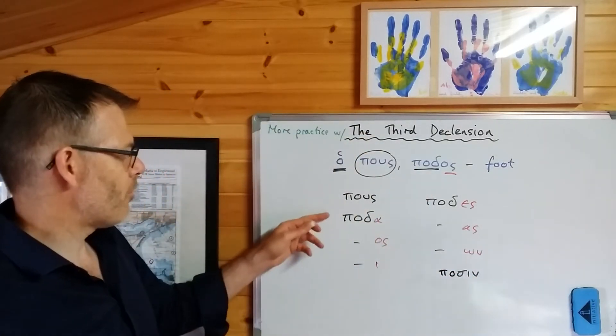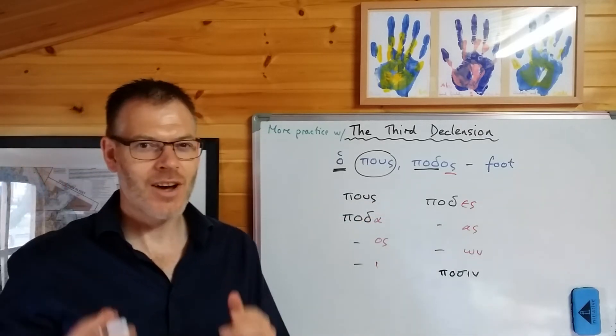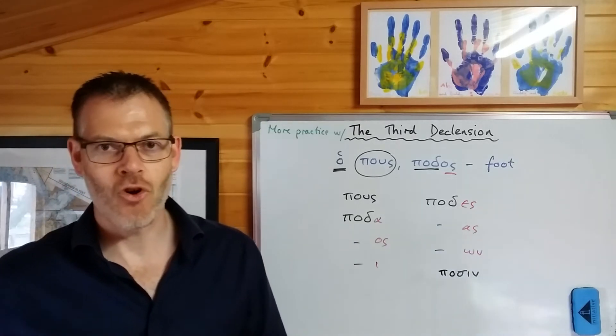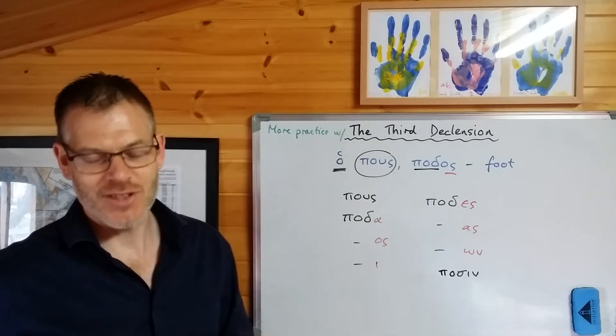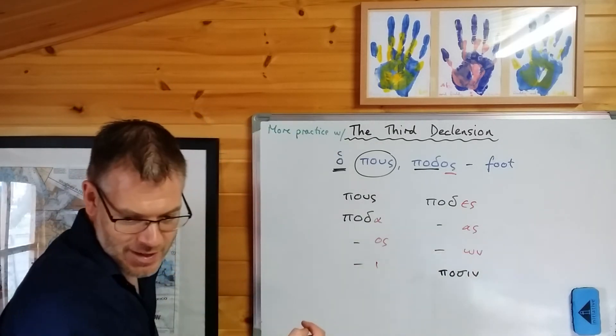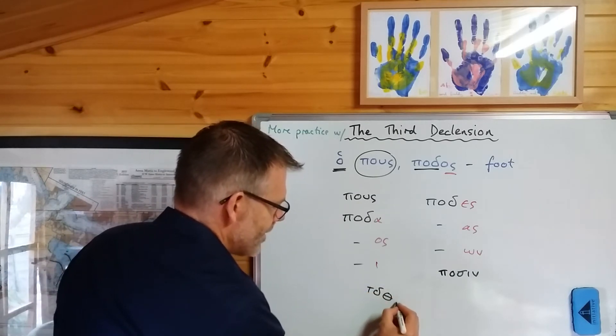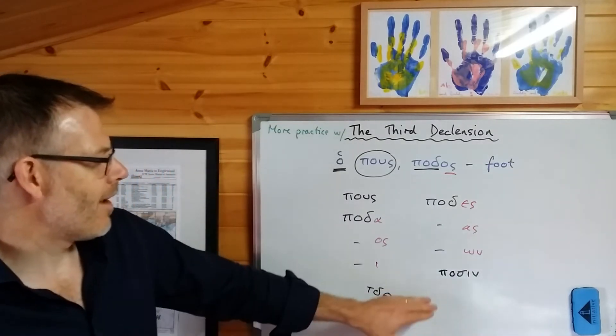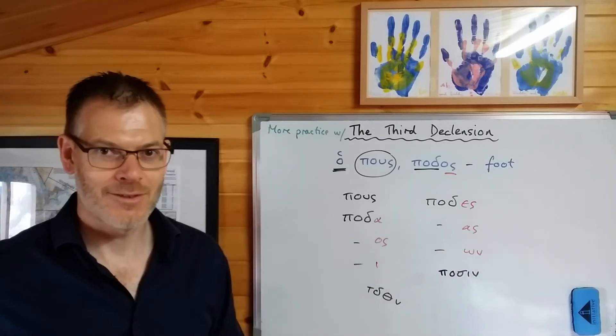And Duff notes that there are a number of consonants which, if they appear at the end of the stem, they disappear completely when the dative plural ending is applied to them. So podsin actually goes to possin. Now let's put that in like this and you can see it more easily. Possin. So this is a full declension: pous, poda, podos, podi, podes, podas, podōn, possin. Now again, you don't really need to think of this as an irregular form of the noun. It's just a pronunciation thing, and you can imagine yourself as a Greek speaker. Any word where the stem ends in a tau, a delta, a theta, or a nu, as Duff points out, that will elide or disappear in the dative plural form. Very straightforward.